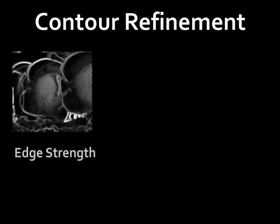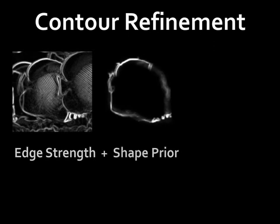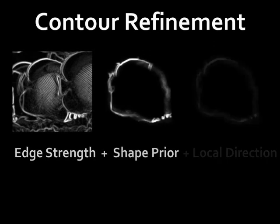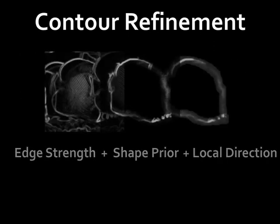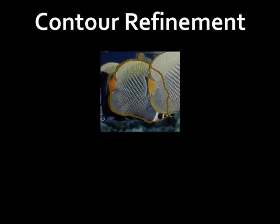We further refine each detected object contour using a snake. Typically, work on active contours only considers local edge strengths, but we also take into account global and local shape matches using the template as a shape prior. The figure shows our refined energy map and active contour results.